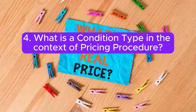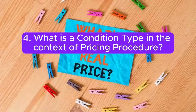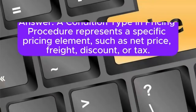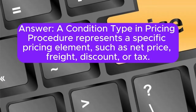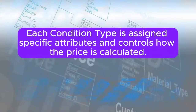Question 4: What is a condition type in the context of pricing procedure? Answer: A condition type in pricing procedure represents a specific pricing element, such as net price, freight, discount, or tax. Each condition type is assigned specific attributes and controls how the price is calculated.